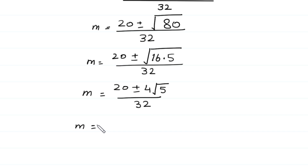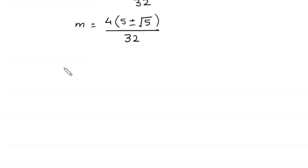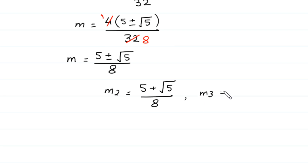Next, m equals — from these two terms we can factor out 4, giving 4 times 5 plus or minus square root of 5, divided by 32. Cancelling 4 from numerator and denominator leaves 5 plus or minus square root of 5, divided by 8. From here we have two values of m: m₂ equals 5 plus square root of 5, all over 8, and m₃ equals 5 minus square root of 5, all over 8.